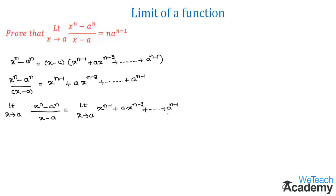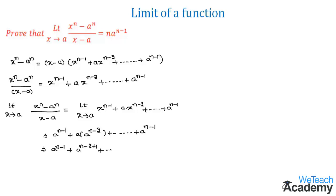Now let us apply the limit by substituting x equals a. When we substitute, each term simplifies: a power n minus 1 plus a into a power n minus 2, and since the bases are equal the powers are added, giving a power n minus 2 plus 1, which equals a power n minus 1. So each term becomes a power n minus 1, and this term is added up to n factors.